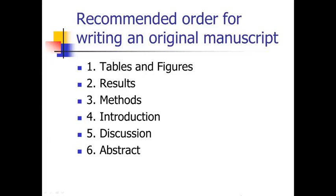If you do that first, then the next thing that follows is writing your results section, because the tables and figures lead right into it. The results section is a summary of what's in your tables and figures, so it makes sense to write it next. Then usually the next thing would be the methods — of course you can write the methods at any time since you've already done the experiments, but I put that as the third step. I find the methods a little boring to write, though not hard.